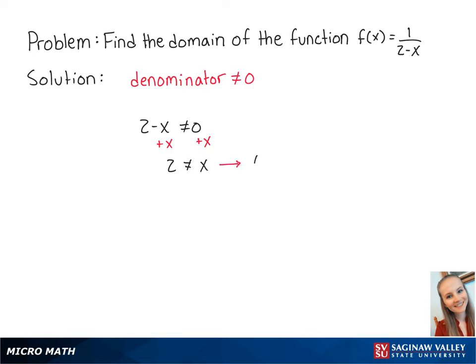So the domain is all real numbers except for when x is equal to 2. So we have negative infinity to 2 and 2 to positive infinity. The parentheses mean that the endpoints are not inclusive. And this is the final answer.